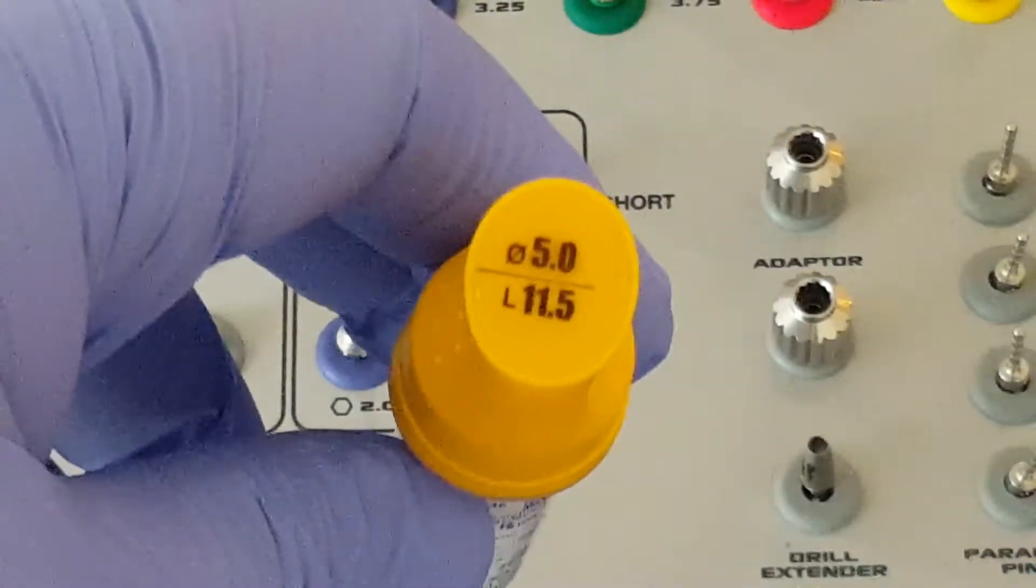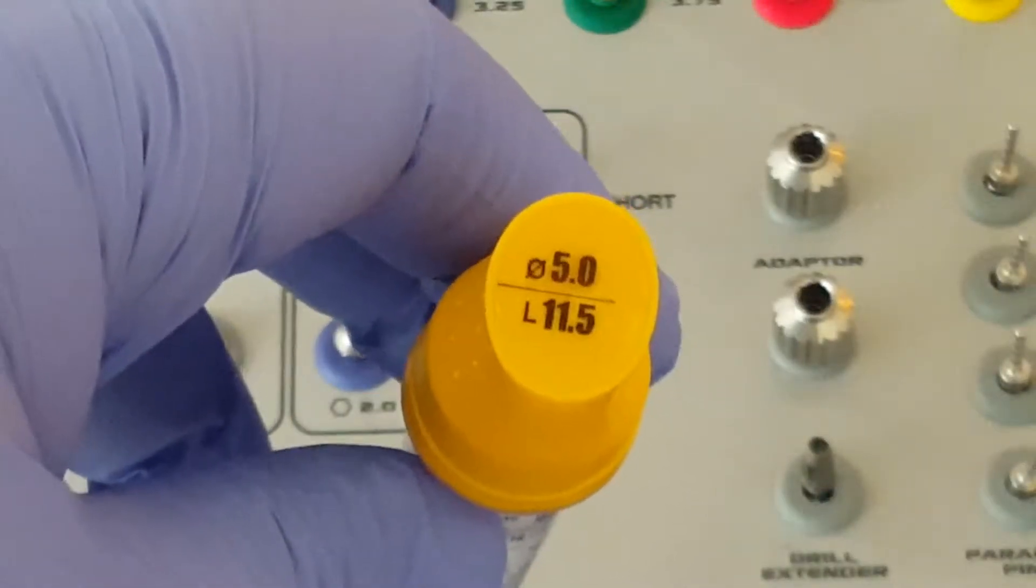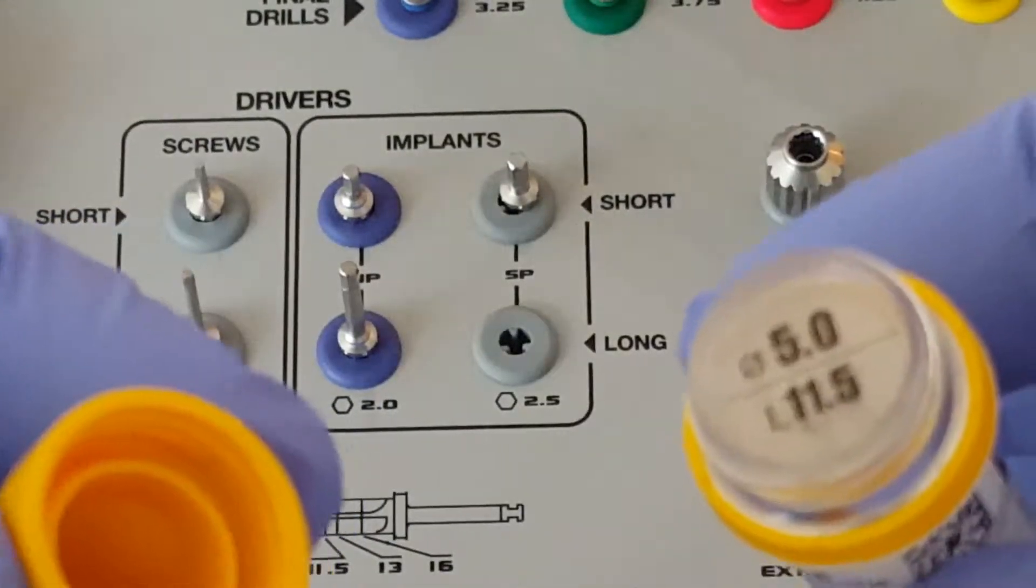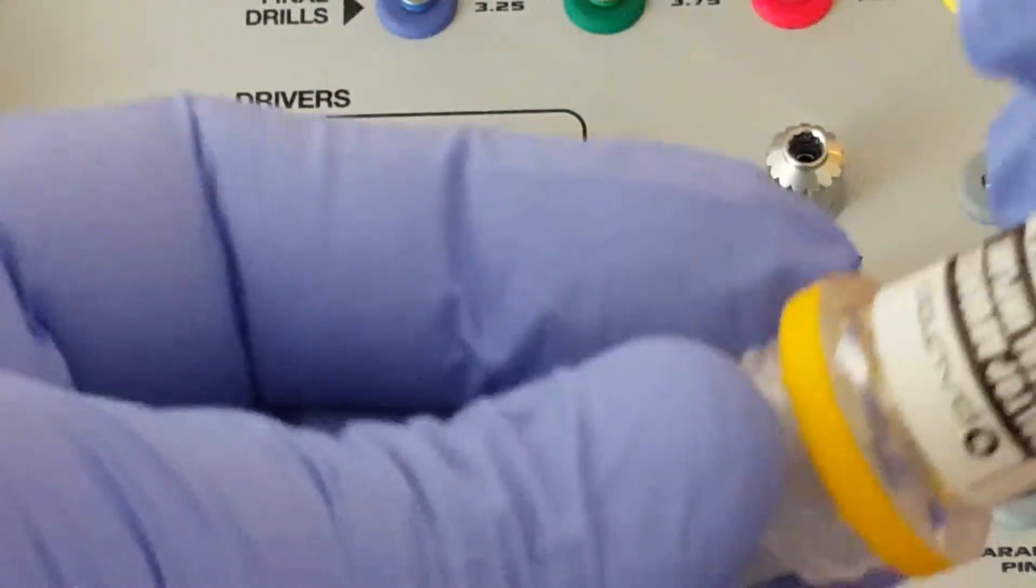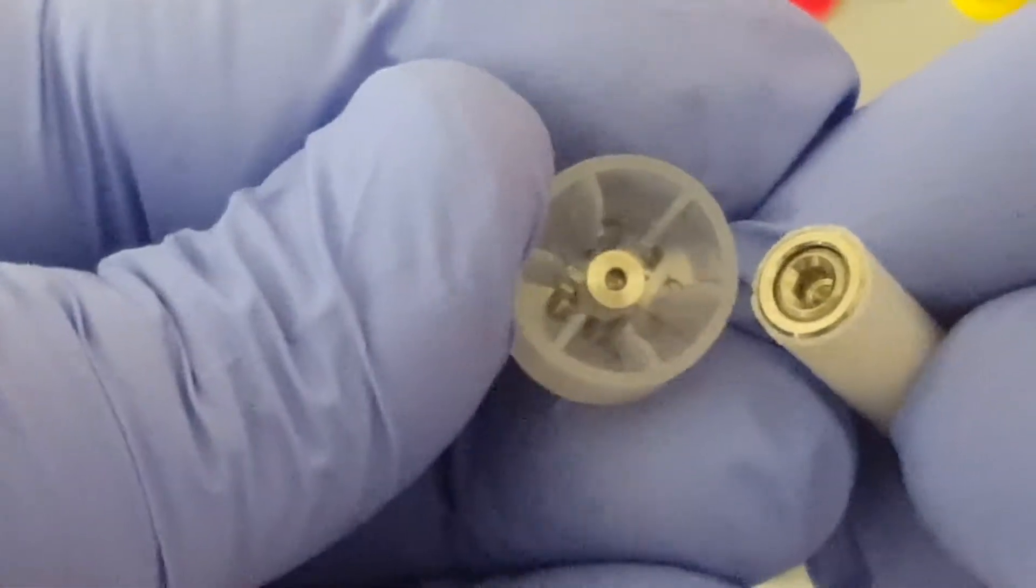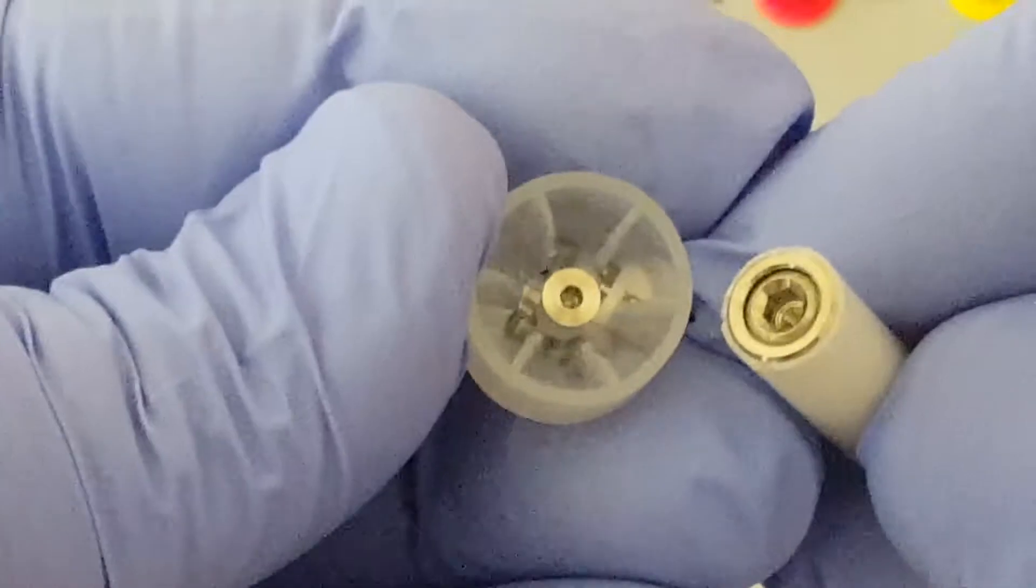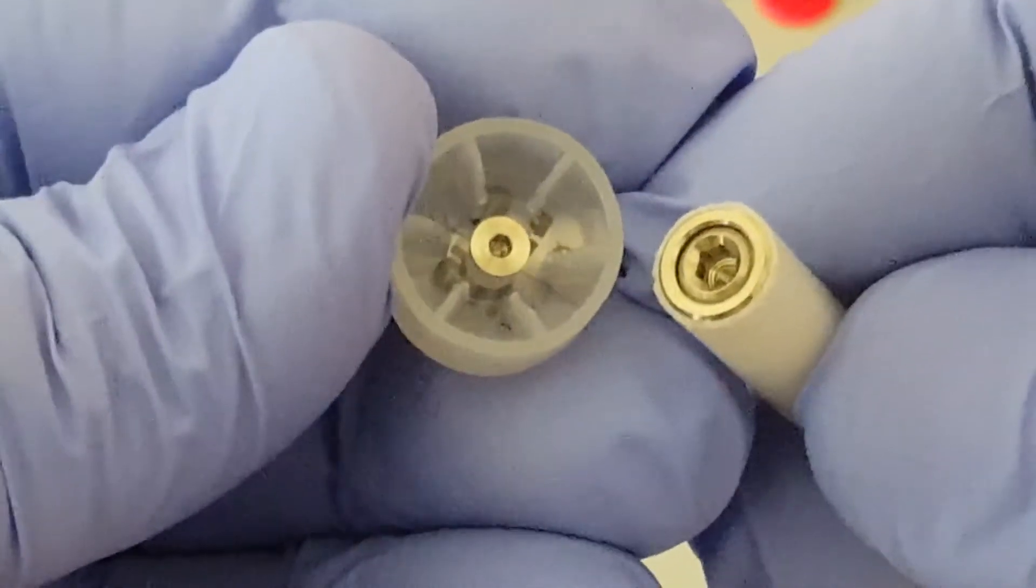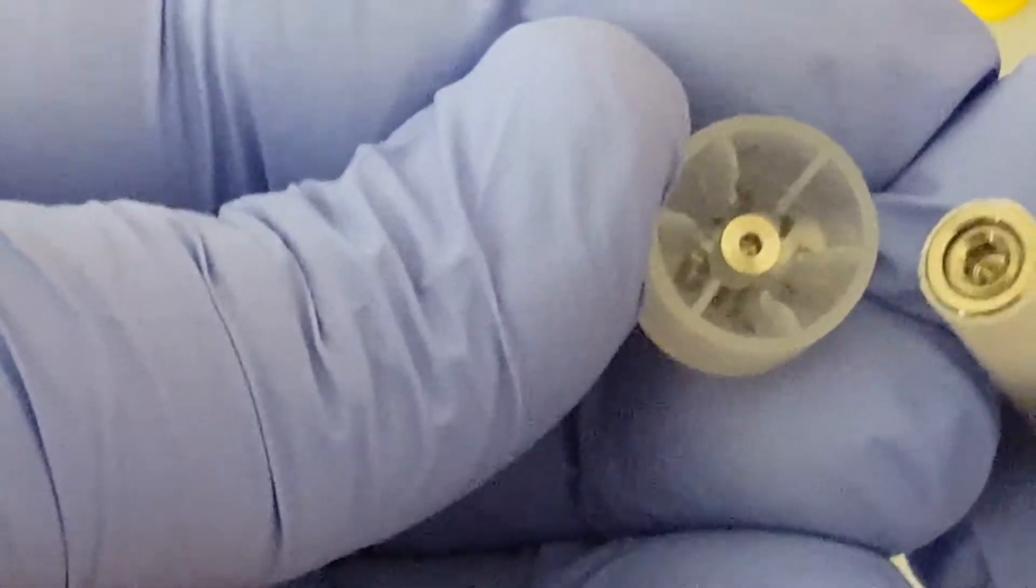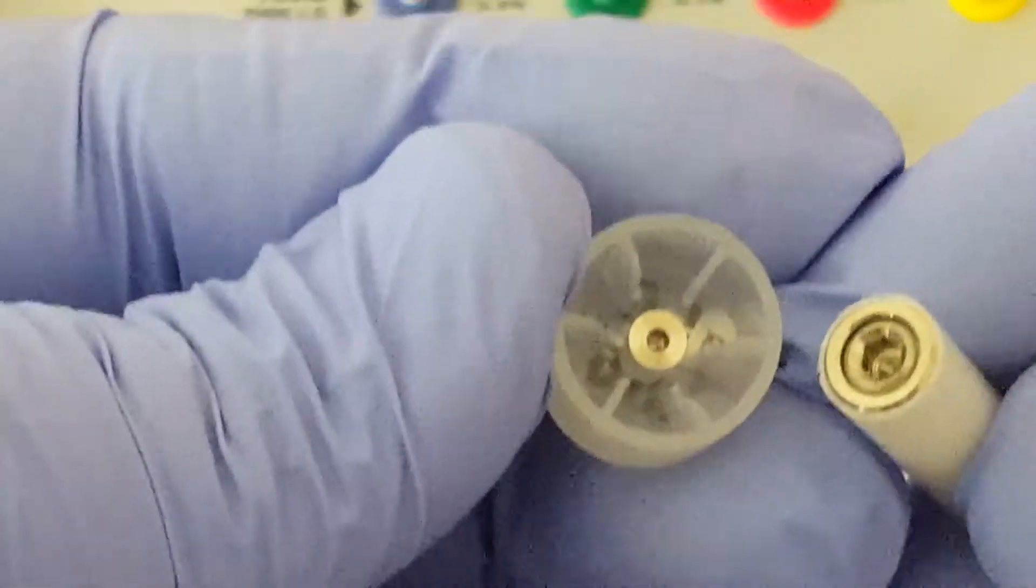The five millimeter implant comes with a yellow top because five millimeter corresponds to yellow. If we open the vial, we can see that we have the inner vial. If we remove that vial and remove the cover, we can see that inside the cover is the cover screw. The 3.25, 3.75, and 4.2 millimeter implants also have the cover screw inside the cover.